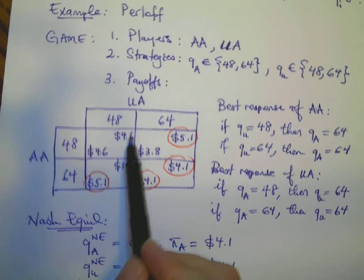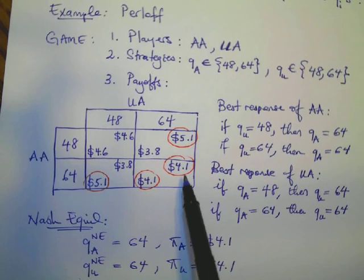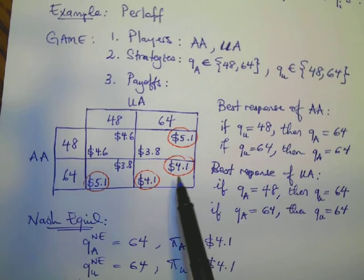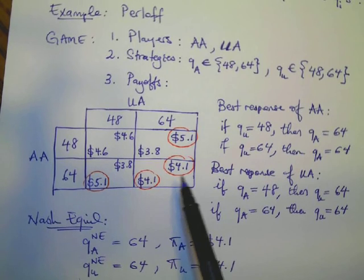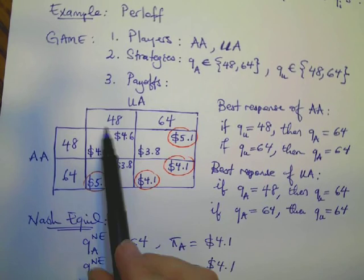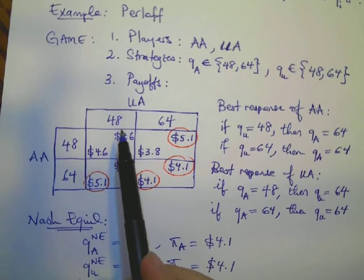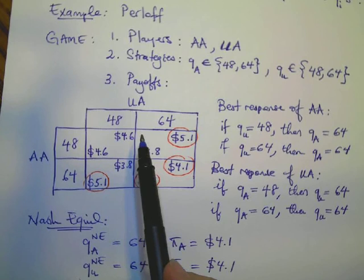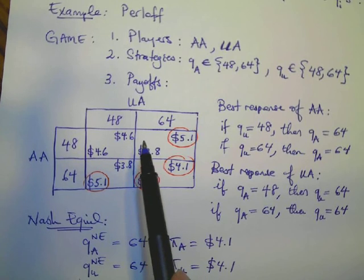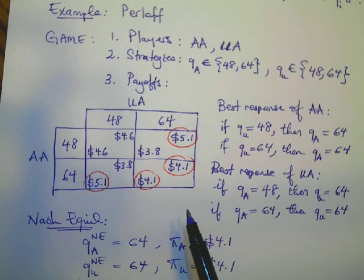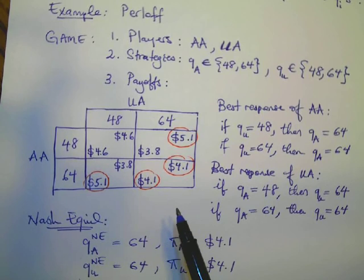This is a typical example of the prisoner's dilemma, where they both ended up earning less profit than they could have earned. This happened because this is a simultaneous move game and they cannot signal to each other to produce less. In this case, to kind of, in a sense, make it a cartel. So, that will be it for today and we will continue the game next. Thank you.